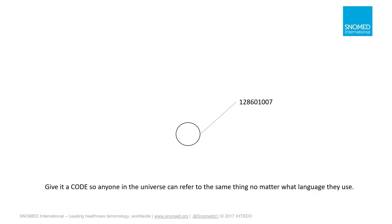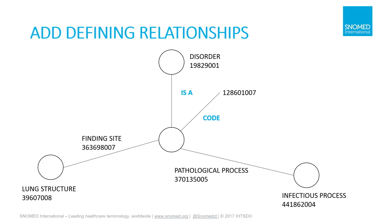Now we take this thought and we connect it to other thoughts. So if we say that this thought with this particular code is a kind of disorder — and disorder is also a thought with a code — we can say that it has the finding site of the lung structure, and then we can say that it has a pathological process, which is an infectious process. Because of the connection, we're talking about a disease of the lung that is infectious, or a lung infection.